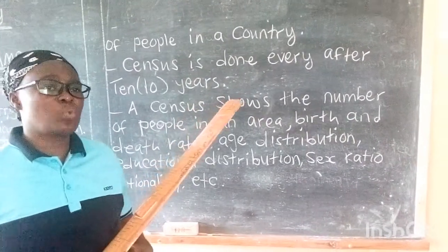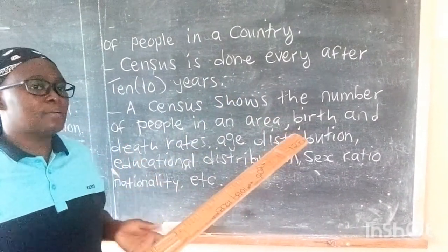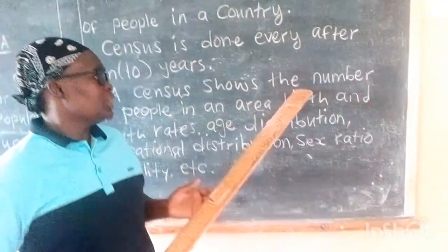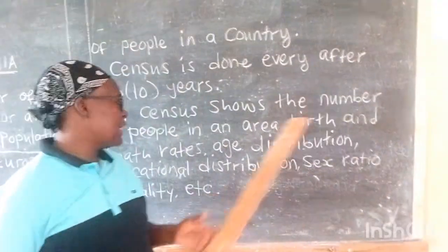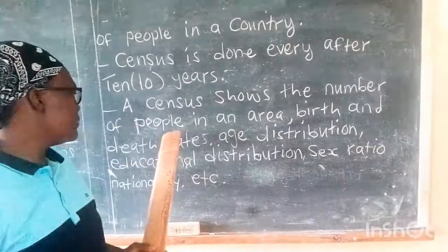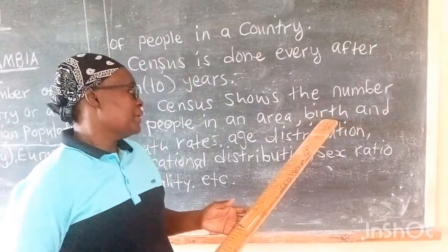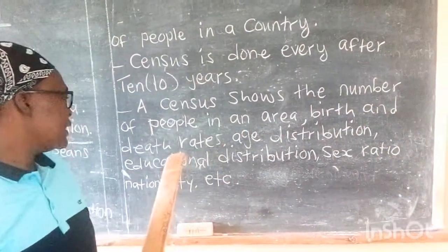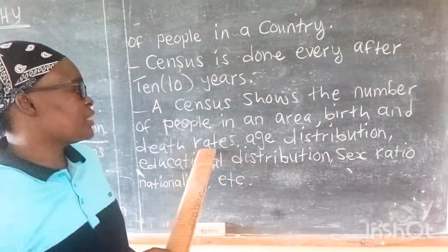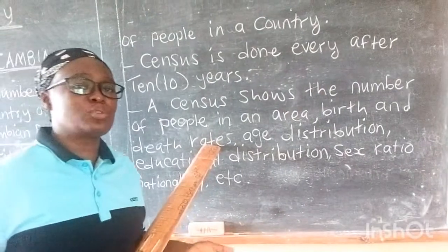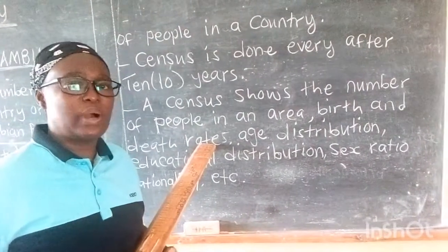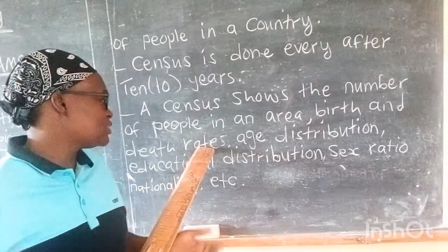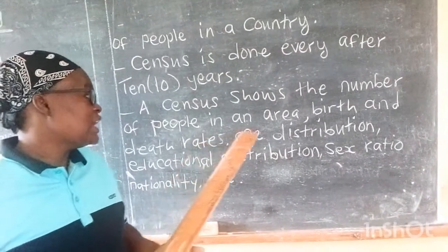When people go to count the people found in an area, census shows the number of people in an area, when these people were born, and death rates. For example, if they come to a family, they will ask how many are you and how many died in your family — that's what death rate is.